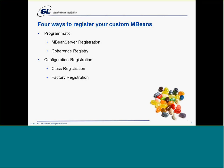The other way is to use a configuration registration — which allows Coherence to actually register the MBEs for you. This allows you to basically configure an XML file: a custom MBEs XML configuration. It also provides the standard override capability within Coherence. Standard MBEs are normally done either through class registration — providing a class for the MBE — or using a factory method to actually call and instantiate MBEs for you.